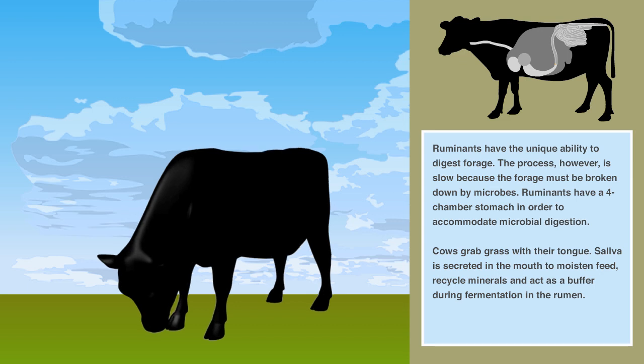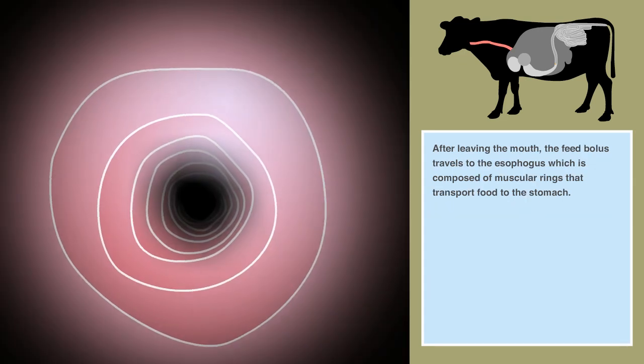Cows grab grass with their tongue. Saliva is secreted in the mouth to moisten feed, recycle minerals, and act as a buffer during fermentation in the rumen.